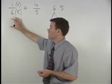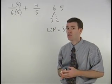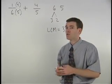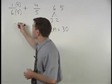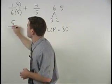And when we multiply anything by one, it doesn't change its value. So our first fraction becomes five over 30.